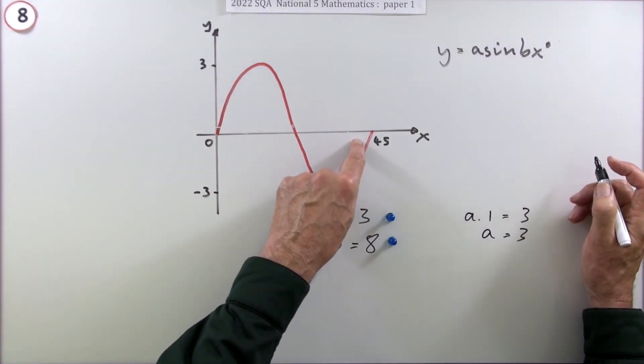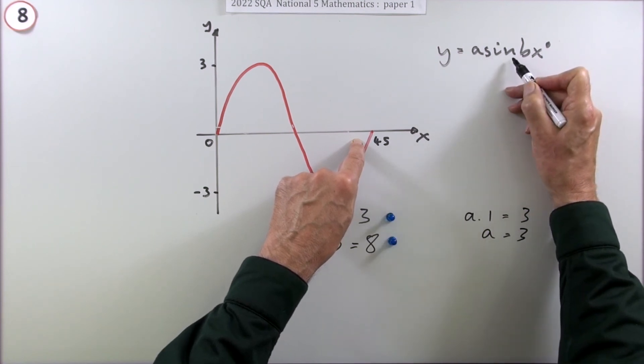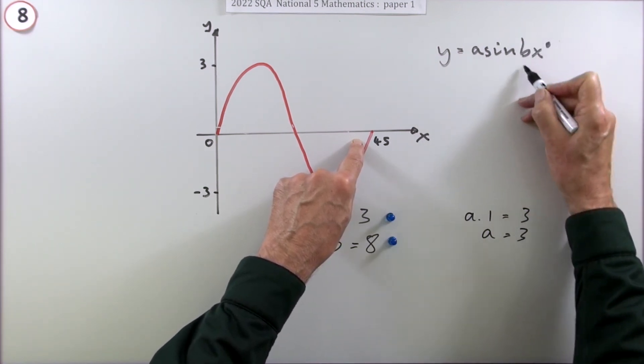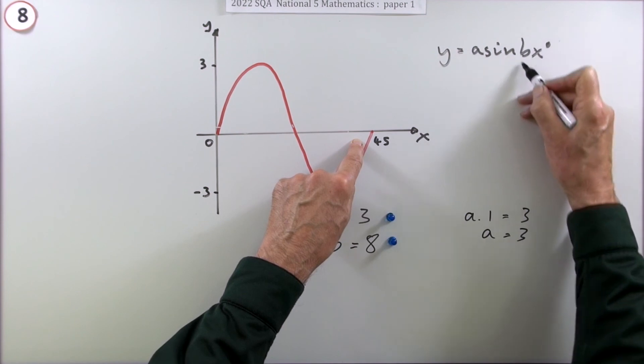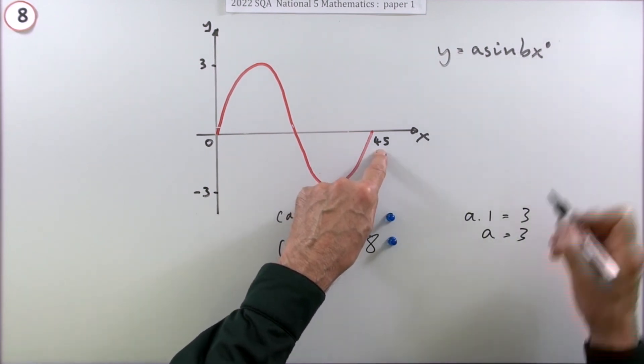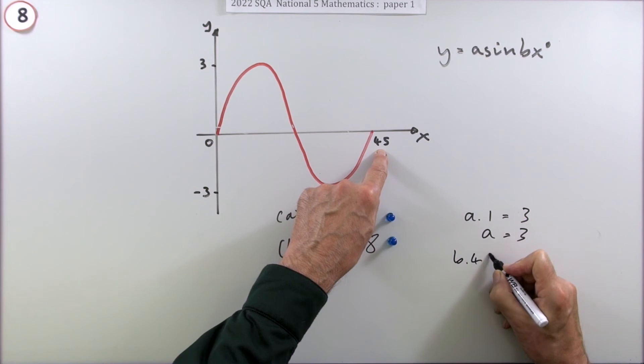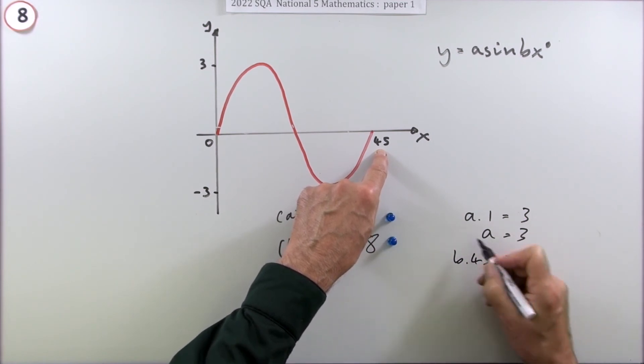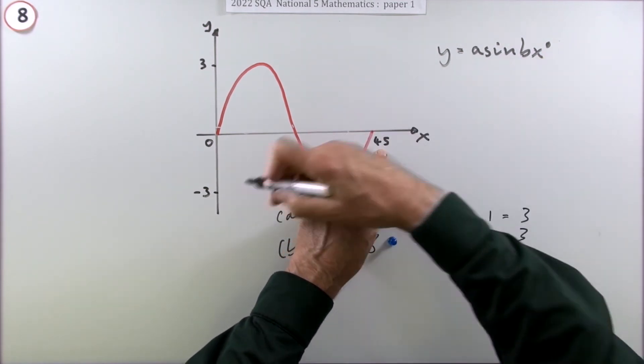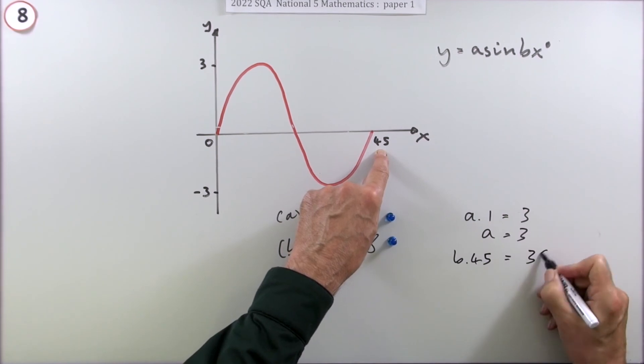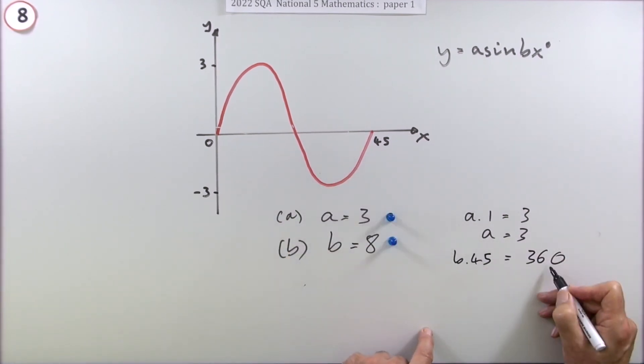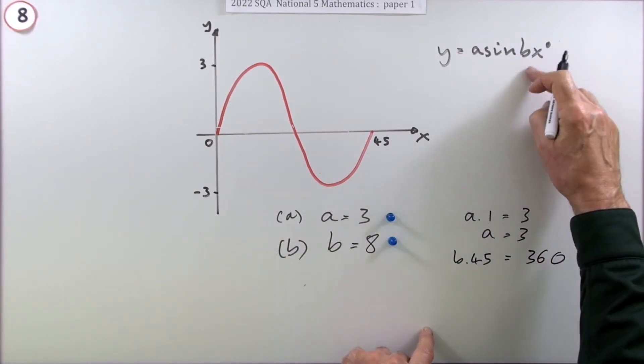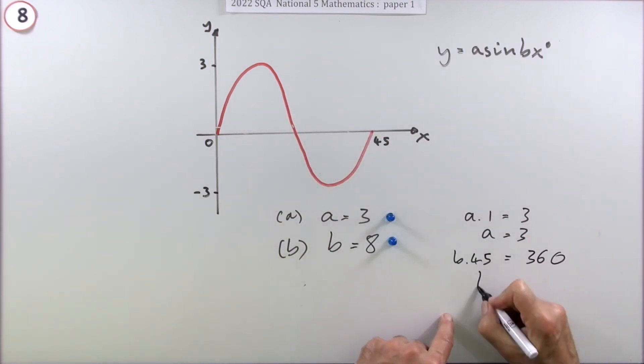Next part - sine should complete its cycle by 360 degrees. So if this sine has completed its cycle, it thought that this here was 360 when x was 45. It thinks that b times the 45 is really a 360 because it's then completed its cycle. So if it thinks that b times 45 is 360, that means b must be 360 divided by 45, so b must be 8. Same as before.